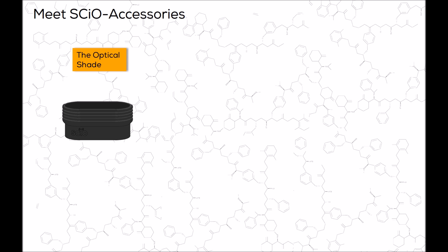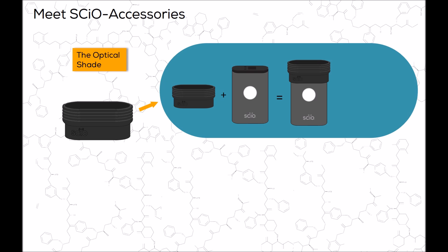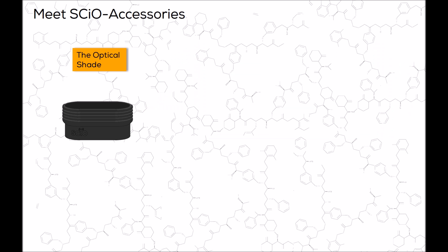One of your SCiO accessories is the optical shade. The shade should be attached to the front of your SCiO and is useful for blocking external light sources and controlling scan distances. The shade can be attached to both the SCiO sensor and the SCiO cover. When scanning with the shade, make sure to be as close to the object you are scanning as possible.